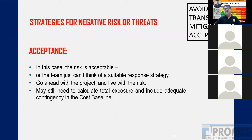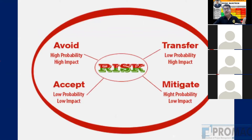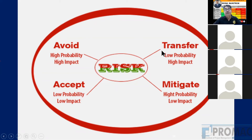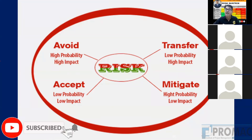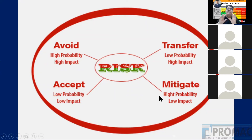Acceptance means we let the risk come and accept it. For low probability and low impact risks, we accept and put them on the watch list. For positive risks (opportunities), there are also four response strategies: Exploit — make the most use of the opportunity. For example, if cement drops from Rs. 300 to Rs. 200 or steel from Rs. 50 to Rs. 35, we purchase most of the material and complete as much cement and steel related work as possible — that is exploiting the opportunity.